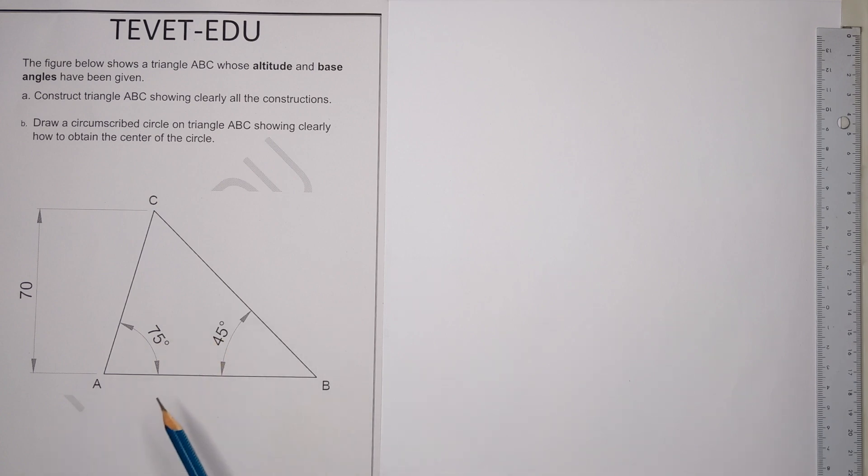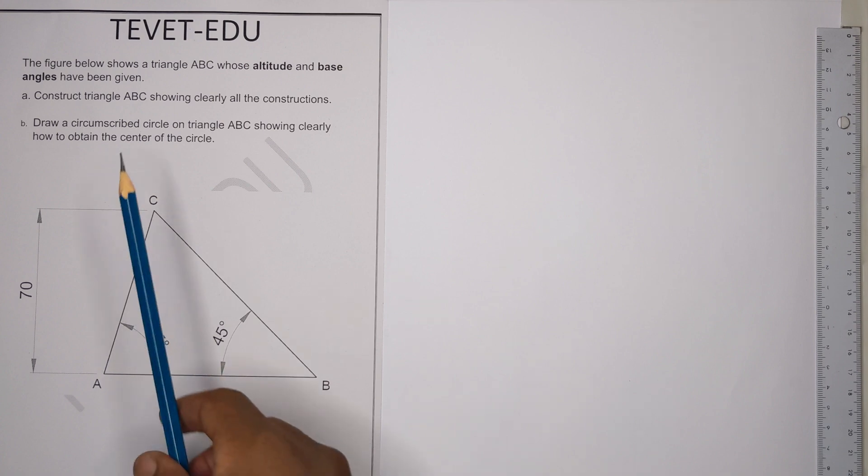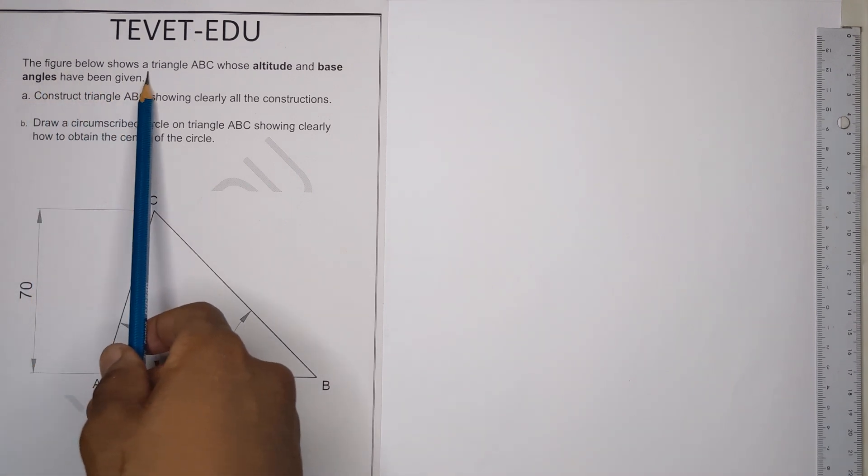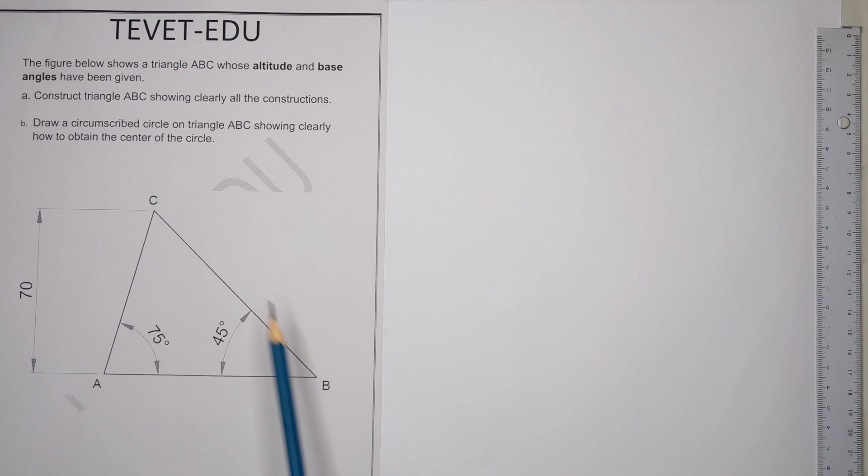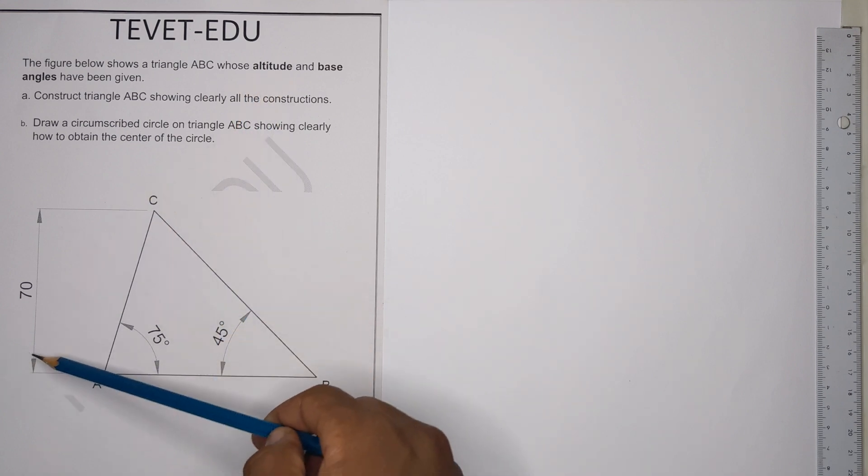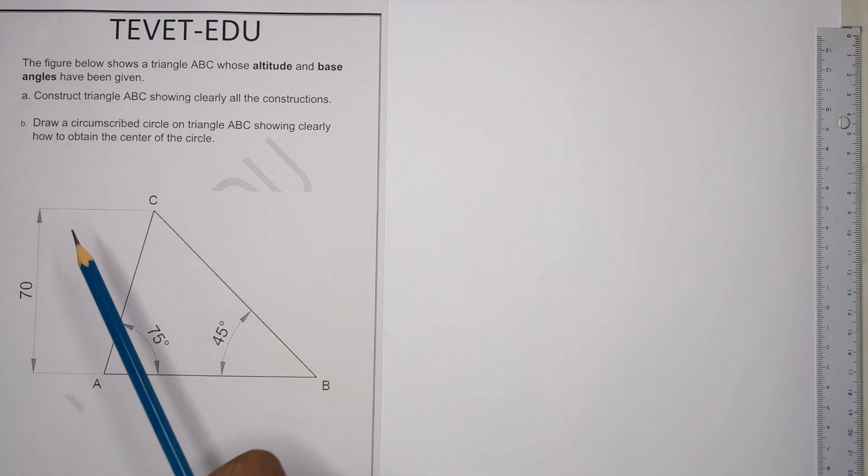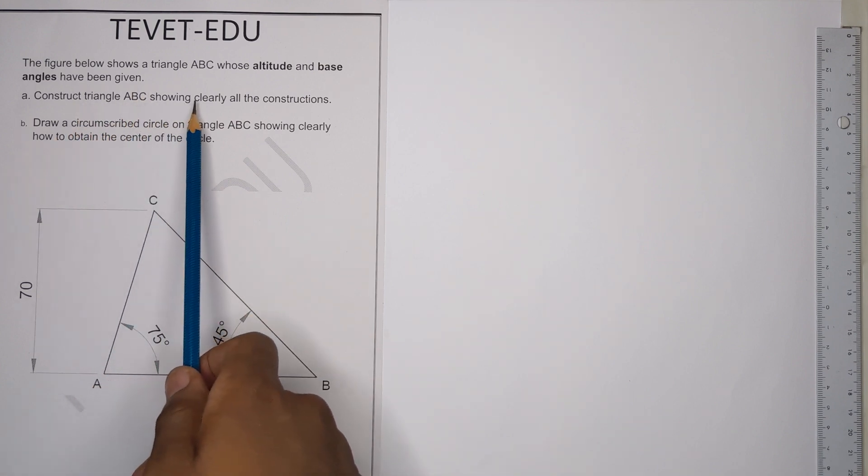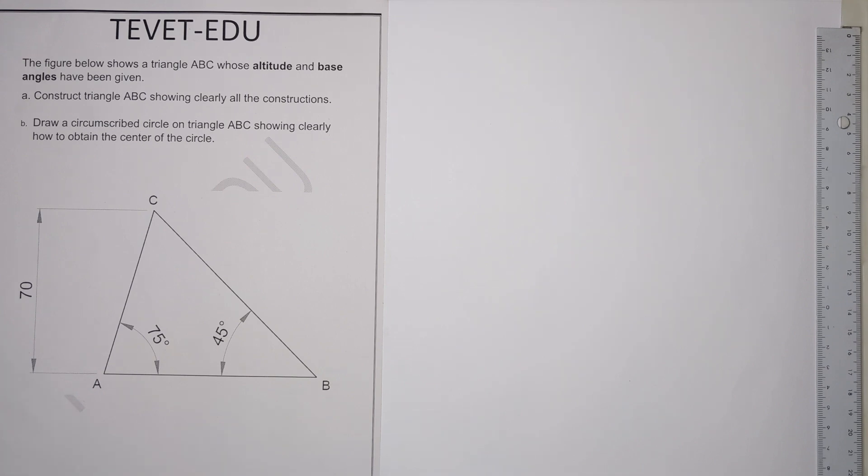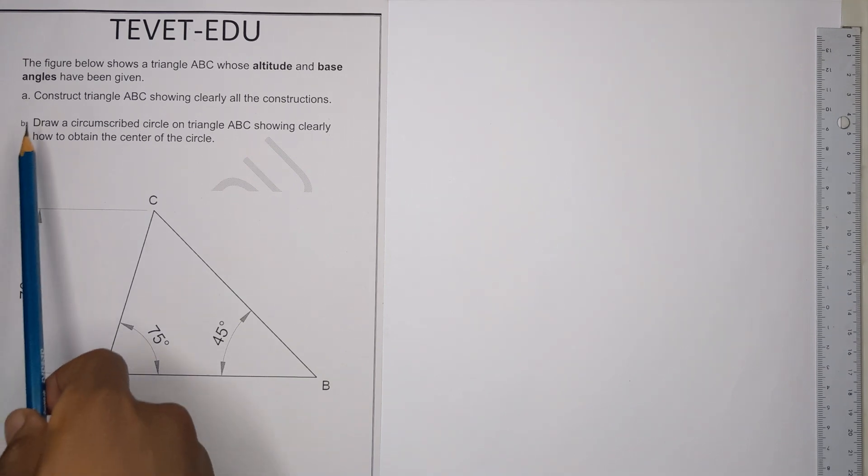The figure below shows a triangle ABC whose altitude, which is the height, and base angles have been given. Construct triangle ABC showing clearly all your constructions.